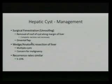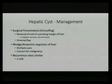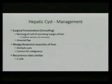The other option is surgical resection — wedge versus anatomic. The indication for resection is when there are multiple cysts where fenestration isn't possible, such as in patients with polycystic kidney disease and polycystic liver disease who may have 30, 40, 50, or even 200 cysts — those patients may require a right or left hepatectomy. Resection is also indicated when there is any concern for malignancy. Recurrence rates are similar for both fenestration and resection, which is why fenestration is preferred as it's less invasive. Recurrence rate is about 5 to 15%.